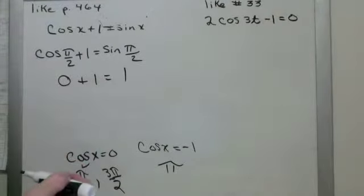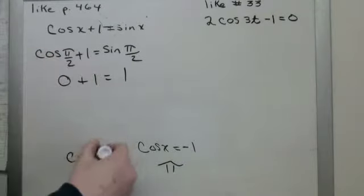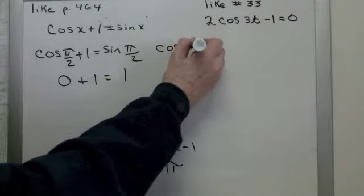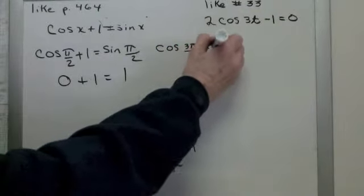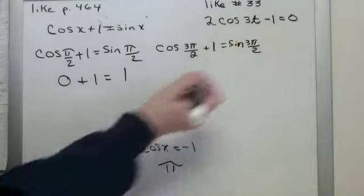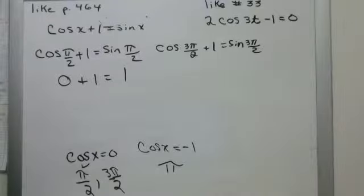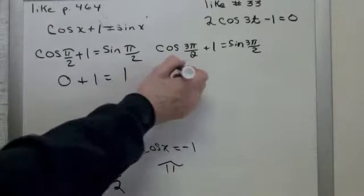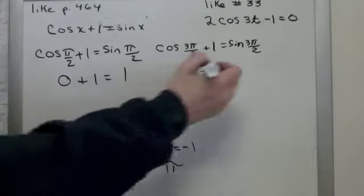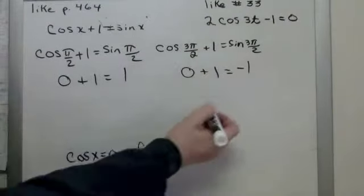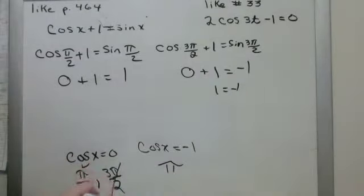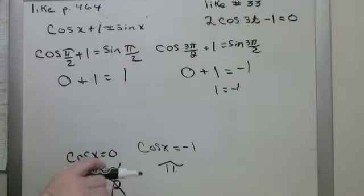What else do I have to check? 3 pi over 2. Cosine 3 pi over 2 plus 1 has to equal the sine of 3 pi over 2. What's the cosine of 3 pi over 2? That's 0 plus 1. What's the sine of 3 pi over 2? That's negative 1. Uh-oh. 1 equal negative 1? Not true. I have to rule out that answer.